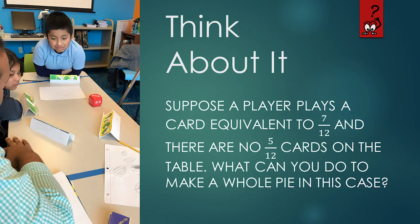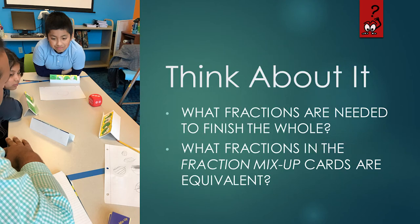While playing this game, here are some things to think about. Suppose a player plays a card equivalent to seven-twelfths, and there is no five-twelfths cards on the table. What can you do to make a whole pie in this case? What fractions are needed to finish the whole pie? What fractions in the fraction mix-up cards are equivalent?